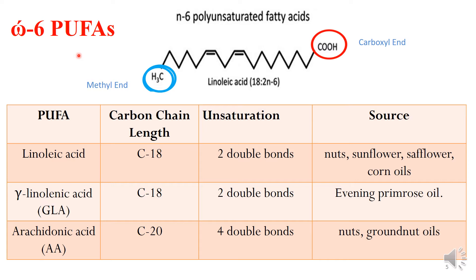Now we will see the omega-6 PUFAs. In omega-6 PUFA, the first double bond from the methyl end occurs at the sixth carbon — that is, one, two, three, four, five, and six. This is the sixth carbon from the methyl end, and this is the first double bond.